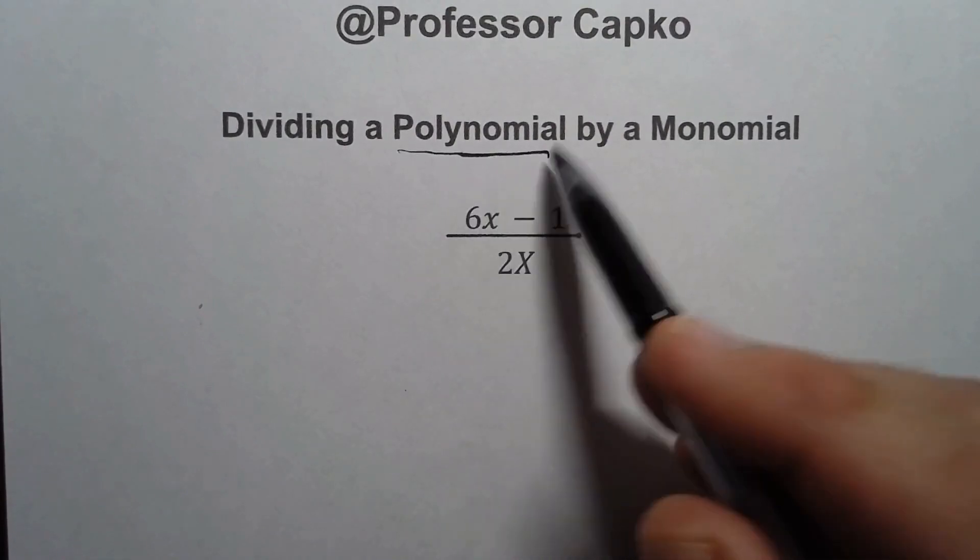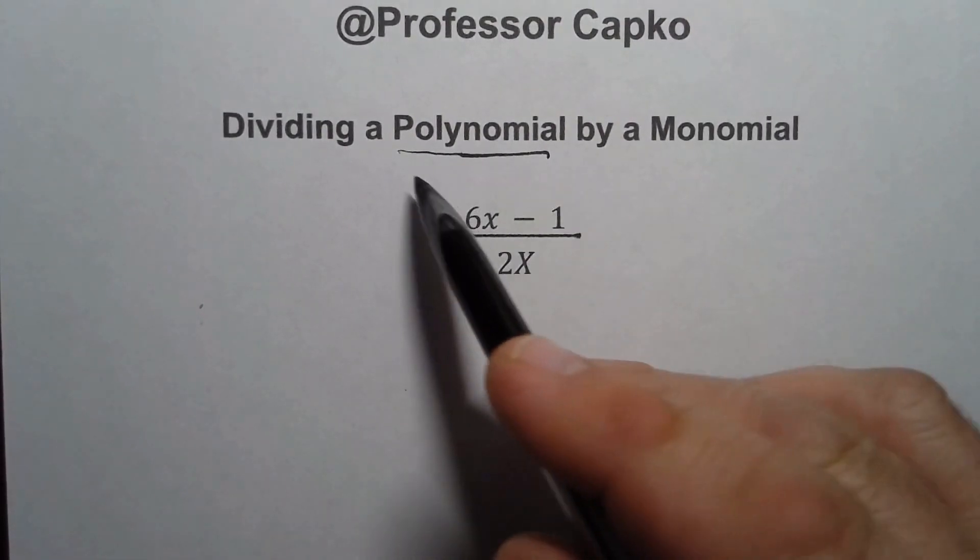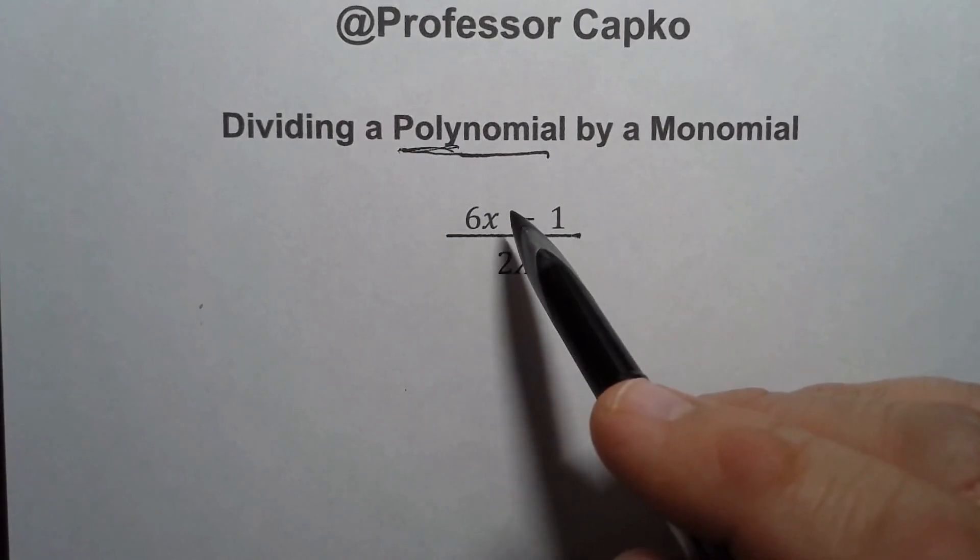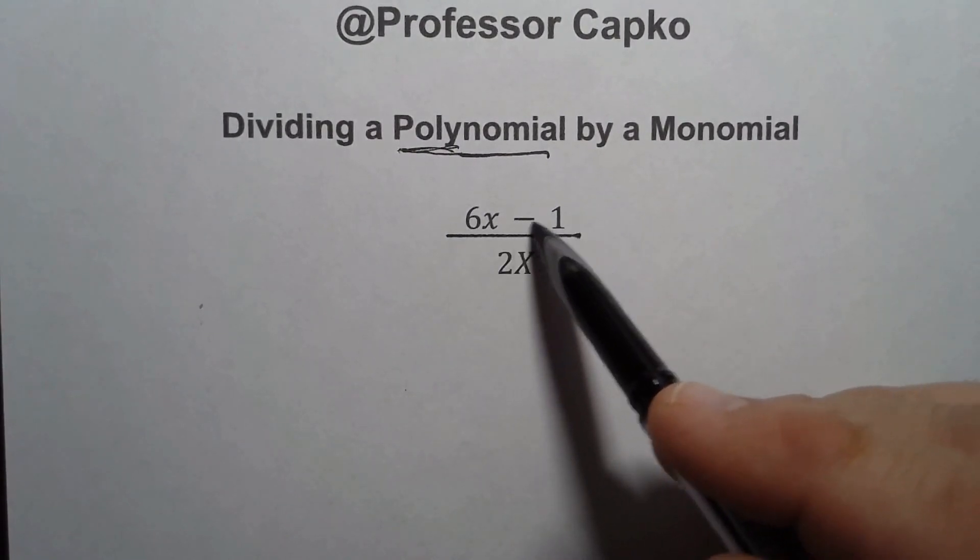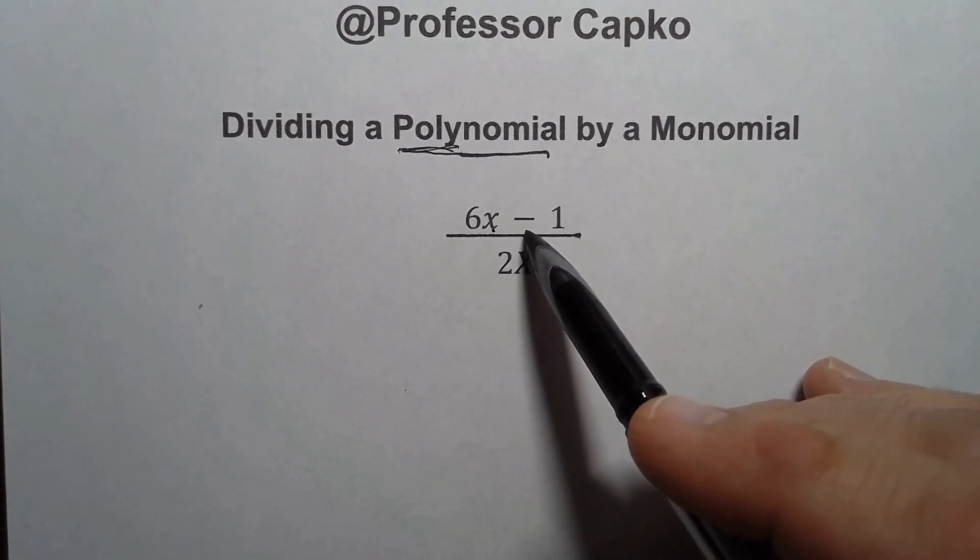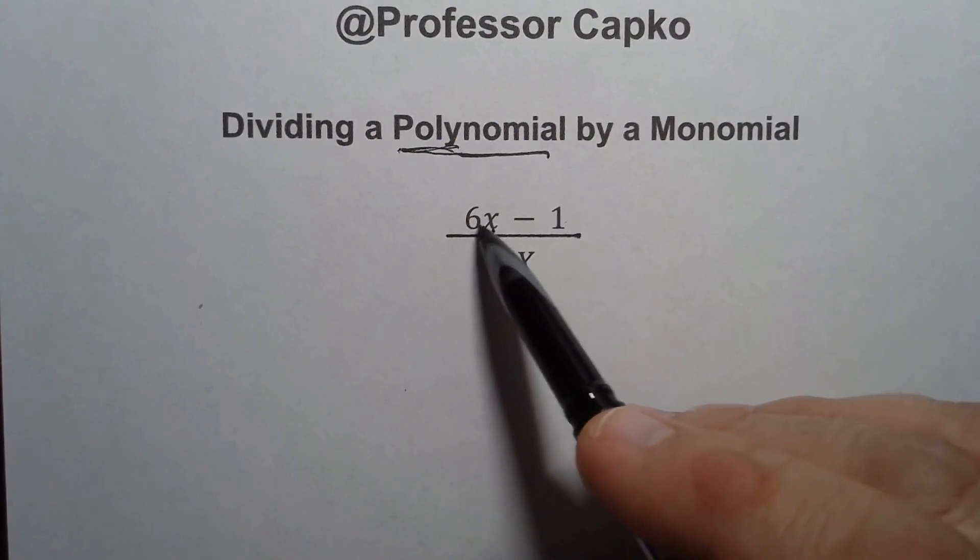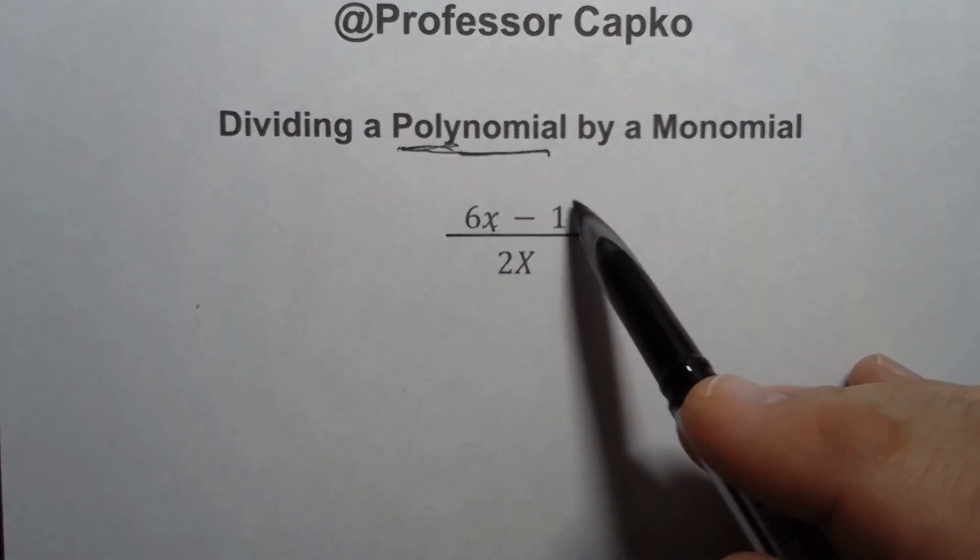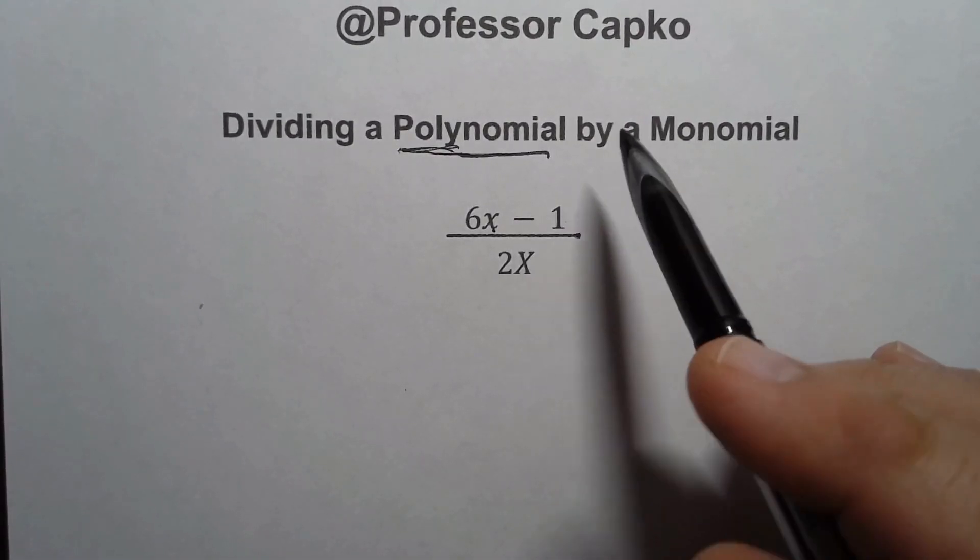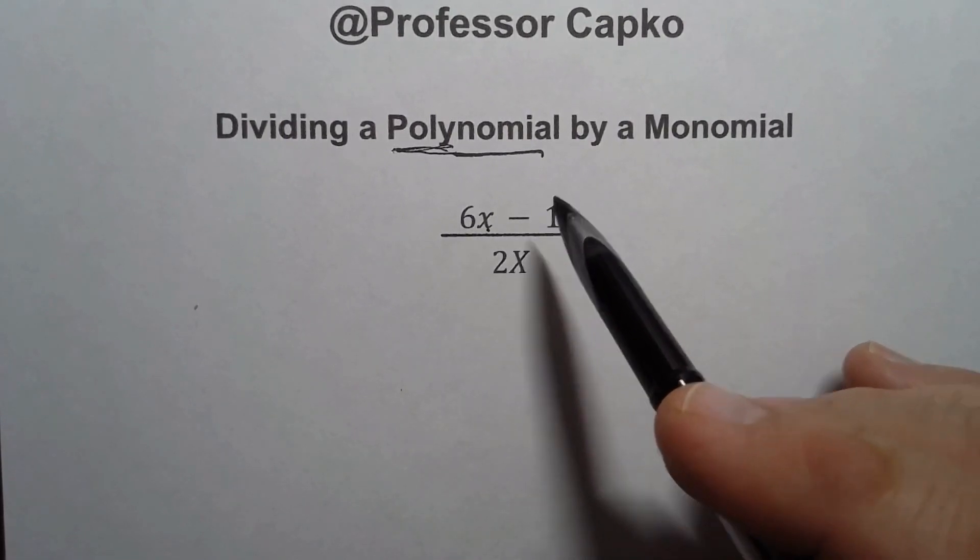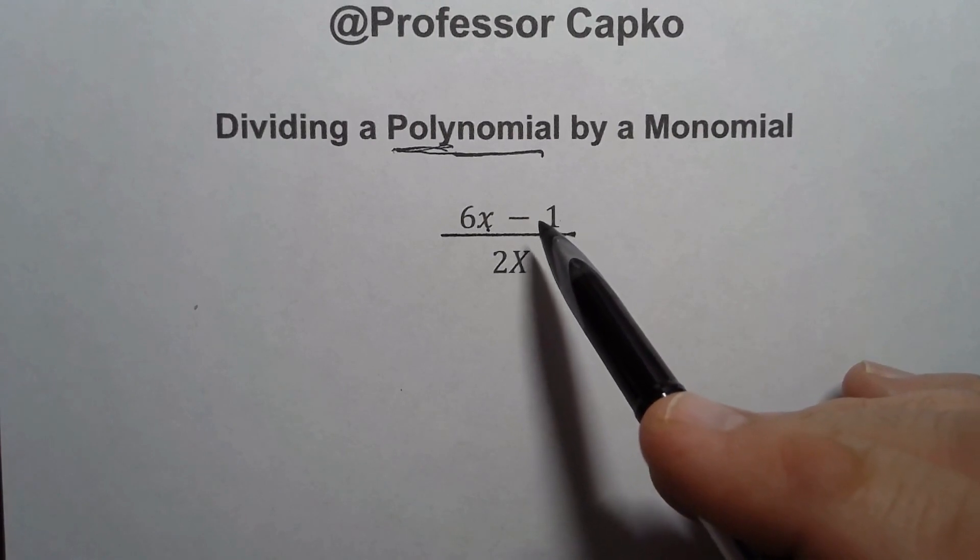Let's talk about the terminology first. Polynomial just means multiple terms - poly meaning many. A term in algebra is something separated by a plus or minus sign. So in this case we get 6x minus 1, so on top here we have two terms: the 6x is a term and the minus 1 is a term as well. So since there's two terms here, this would be called a binomial. It also is a polynomial because there's many of them, but it's more specifically a binomial.